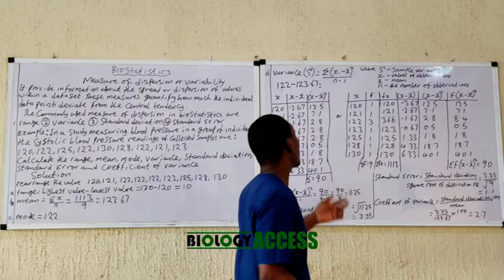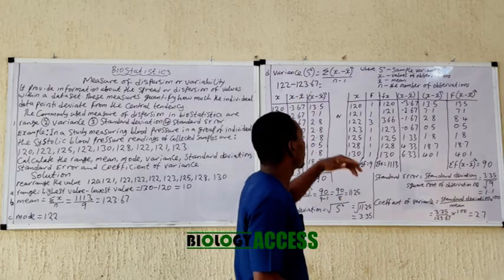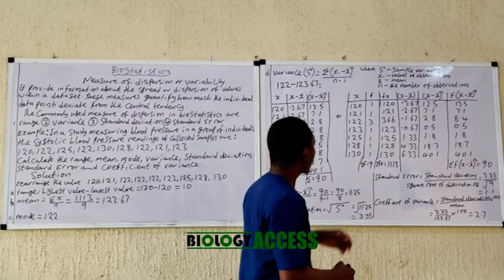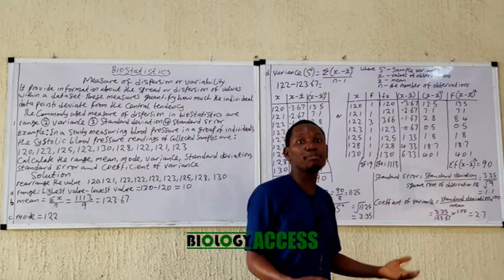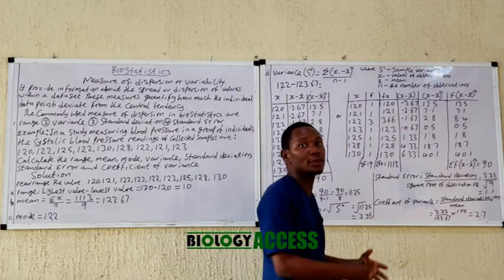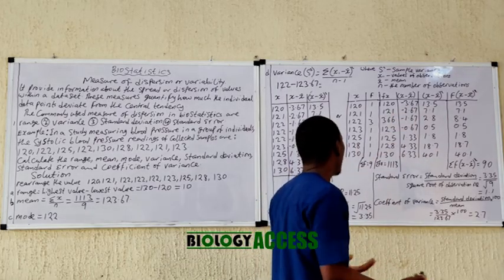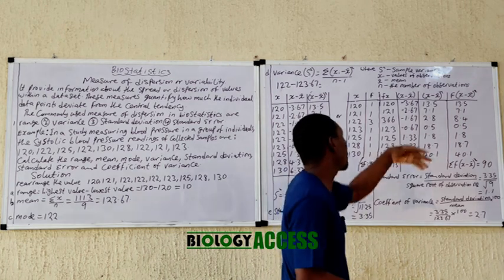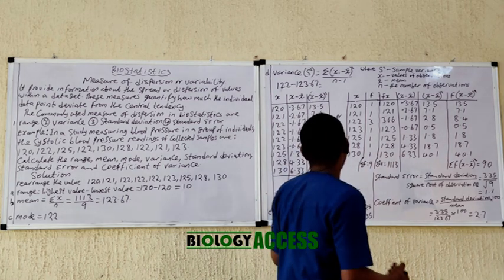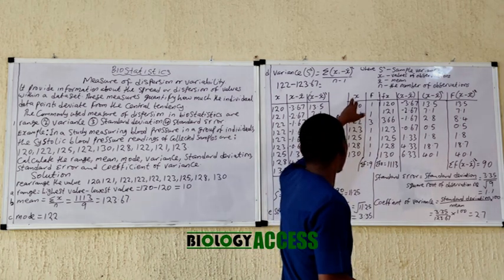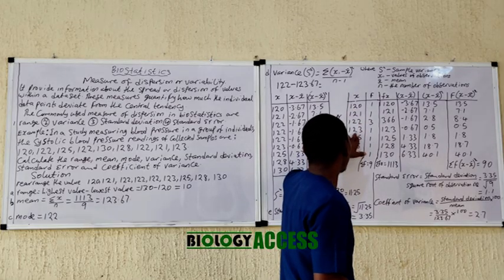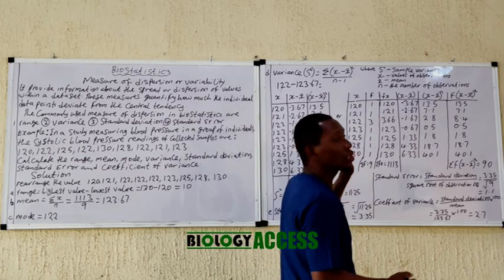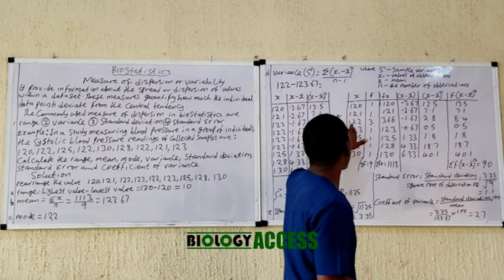You can also use an alternative method to get the variance. In this method, you list the unique x values: 120, 121, 122, 123, 125, 128, 130 — any repeating value is listed only once. Then you record the frequency of each value: how many times each one occurs.